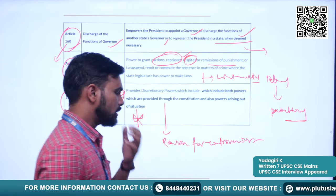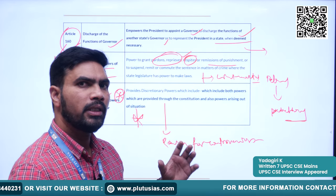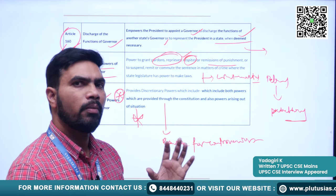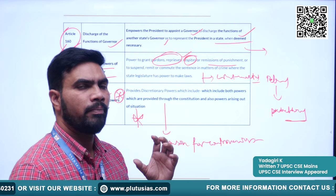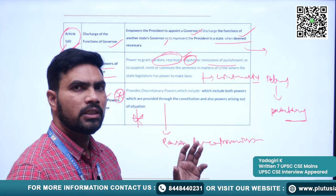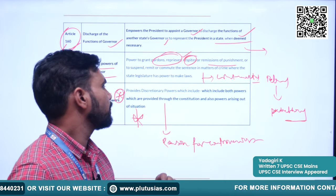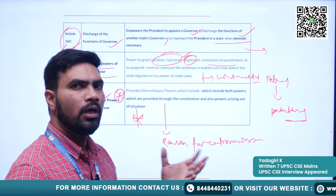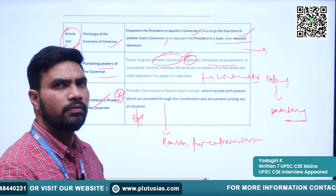Discretionary powers mean there is freedom for the Governor to take decisions on his own. Generally, the Governor has to work based on the aid and advice of the Council of Ministers headed by the Chief Minister. However, there are special occasions where the Governor uses discretion, which has led to a lot of controversies. We will see those challenges, areas where the Governor exercises discretion, and recommendations of two important committees to address these issues.